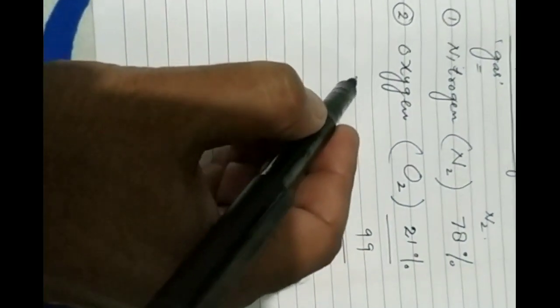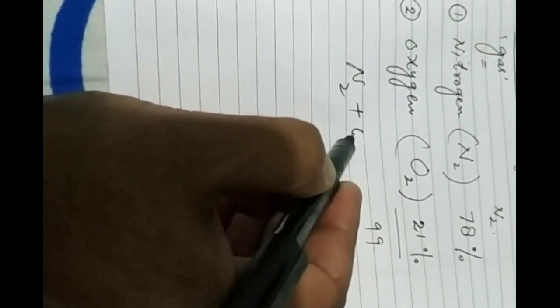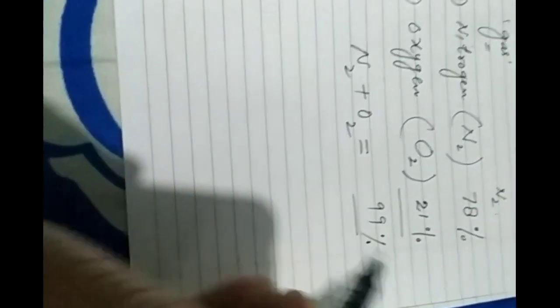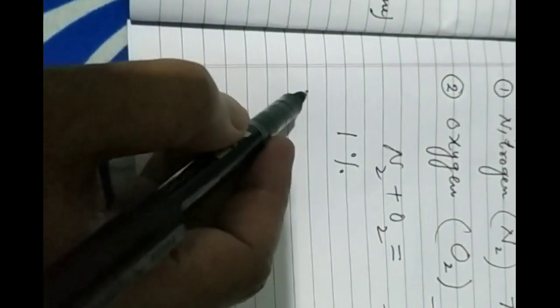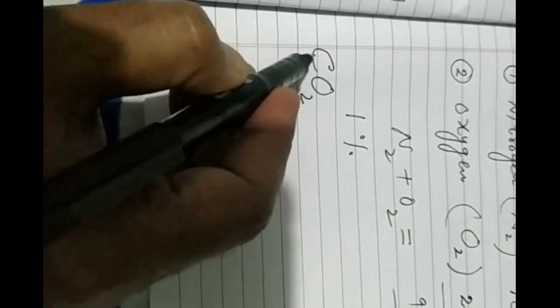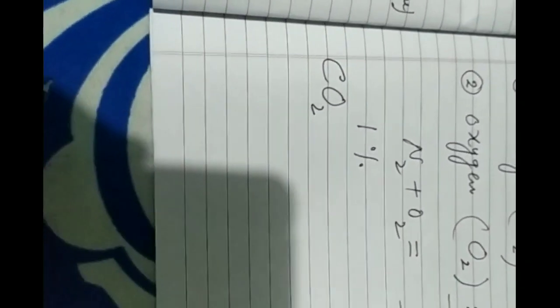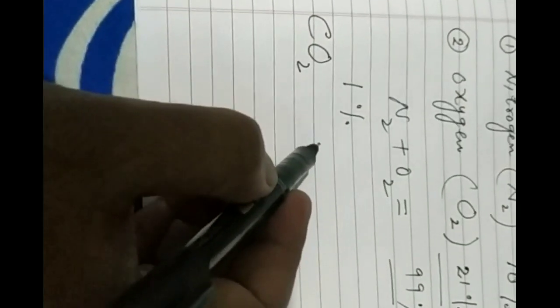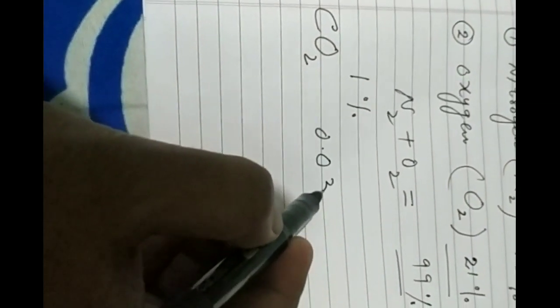Oxygen and nitrogen, N2 plus O2, is about 5 percent. 28 percent together. Carbon dioxide is CO2, capital C, capital O2. Carbon dioxide is 0.03 percent.